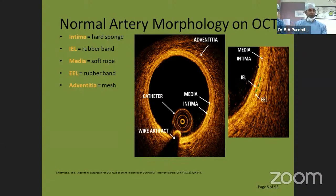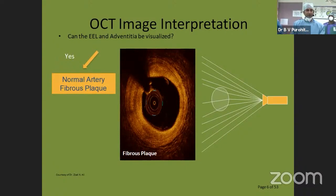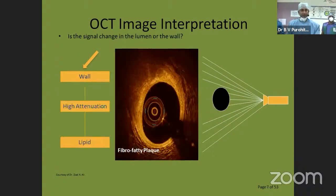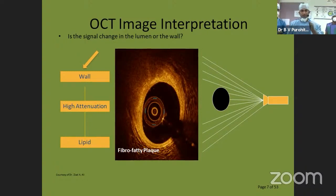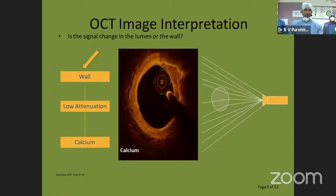Different lesion characteristics: a normal fibrous-fatty plaque looks relatively normal at 3 o'clock but shows fibrous plaque at 12 and 9 o'clock. A fibro-fatty plaque from 9 to 12 o'clock shows a yellowish signal that becomes hazy due to high attenuation — this is a lipid-rich plaque where you cannot see clearly beyond that portion. That's how a lipid-rich plaque looks on OCT.